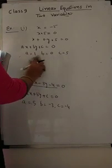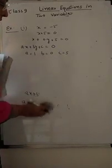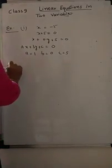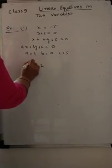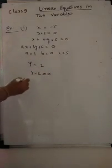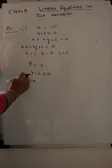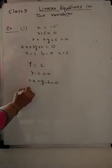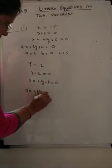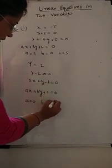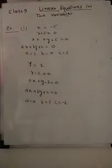So a linear equation in one variable can be converted into a linear equation in two variables. The second equation is y is equal to 2, which is also a linear equation in one variable. You can write it as 0 into x plus y minus 2 is equal to 0. Comparing with ax plus by plus c equals 0, we get a is equal to 0, b is equal to 1, and c is equal to minus 2.